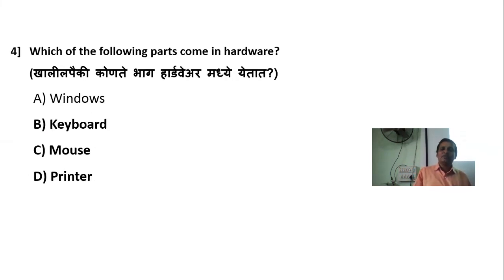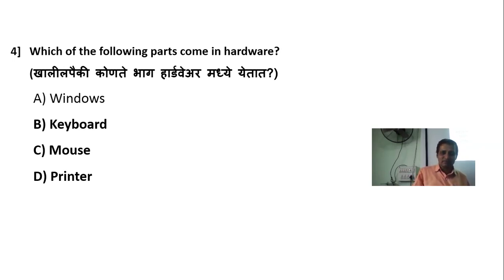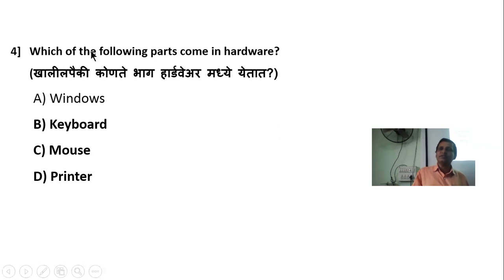Which of the following parts come into the hardware? There are multiple options such as Windows, keyboard, mouse, printer, and Windows as well as the operating system of the software.